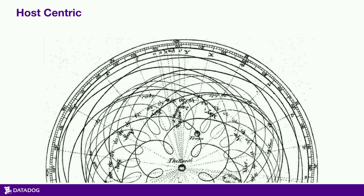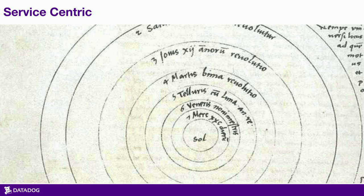Try to avoid thinking about things from a host-centric perspective — your users don't care about the individual host, they care about the service. This is like the Ptolemaic model of the solar system, where we used to say everything revolved around the Earth. How hard was it to come up with the math of where things were at any given time? It's the same challenge if you're trying to figure out how your service is performing based on individual hosts. If you flip it around to be service-centric, you're in a much better situation with much clearer lines.